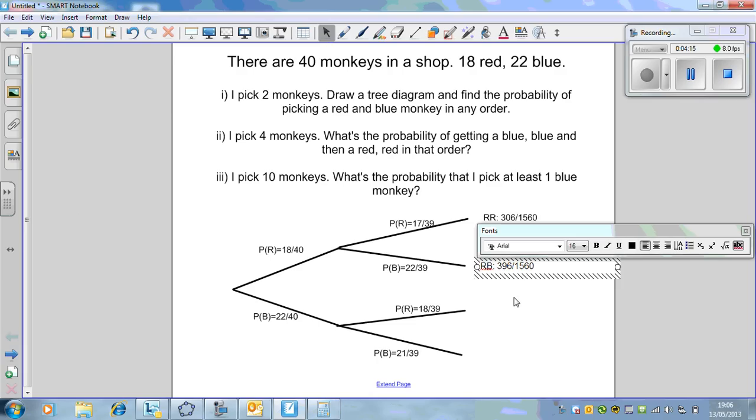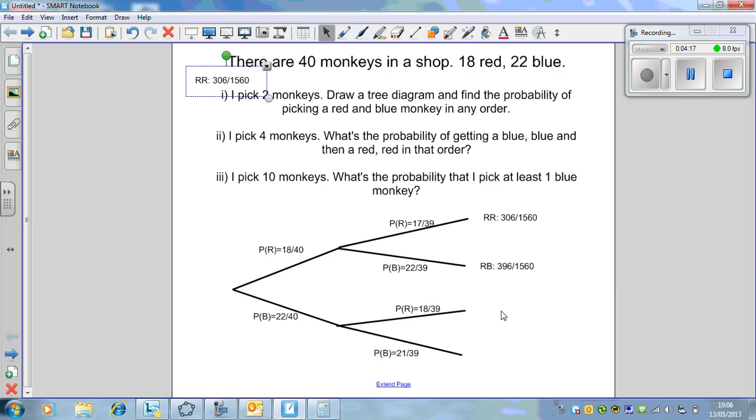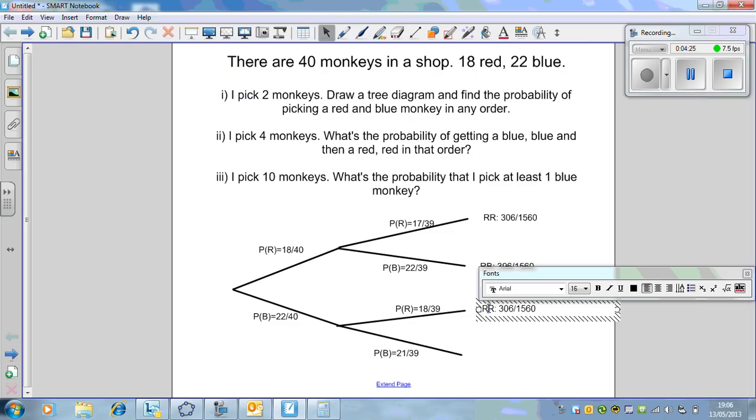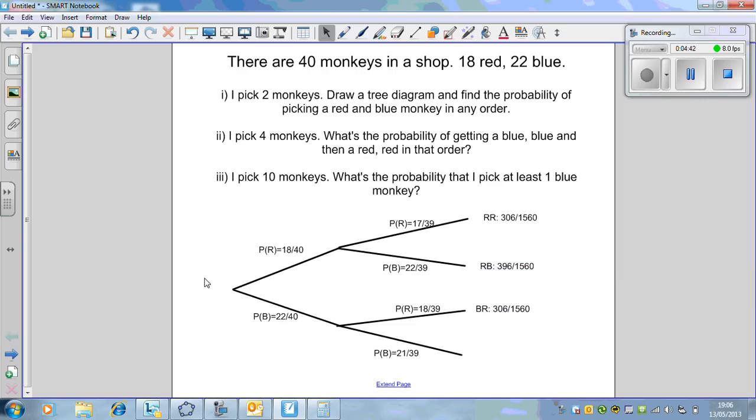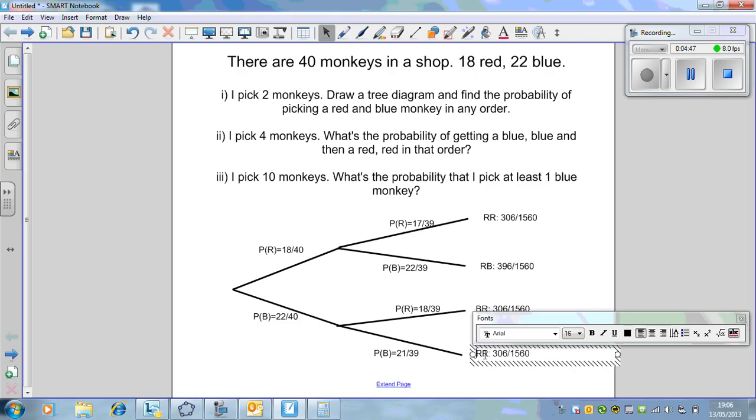This branch represents having a red and a red. We've got a calculator out here. If we multiply these probabilities together, red and red, 18 times 17 gives us 306. It's 306 out of 40 times 39, which is 1560.